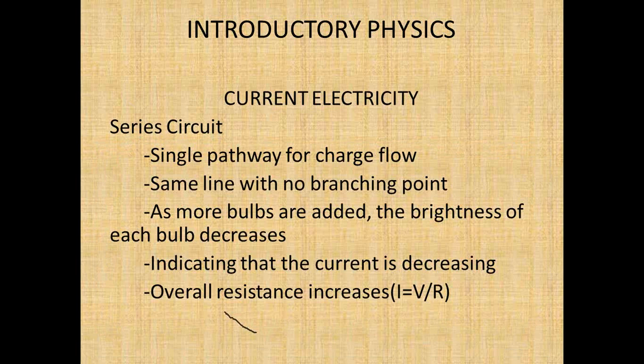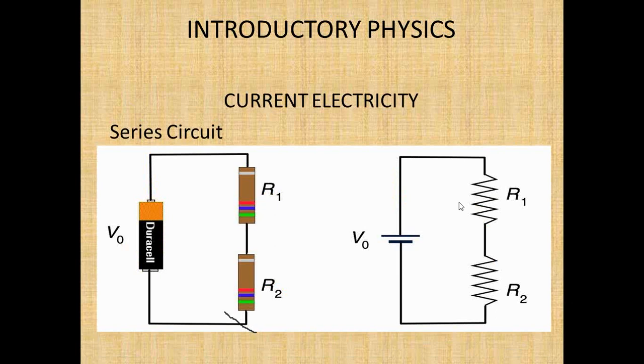There are some important points about series circuits. With a series circuit, you have a single pathway for charge to flow. There are no branching points in the external circuit. We put an indicator bulb in the circuit to observe what happens.